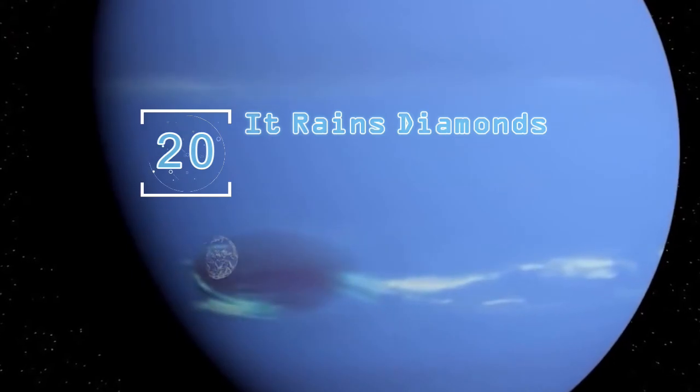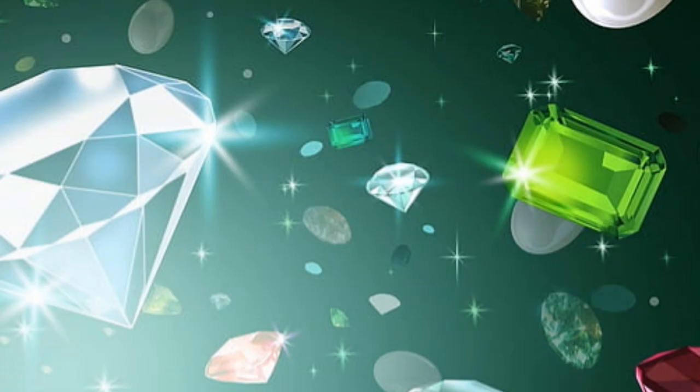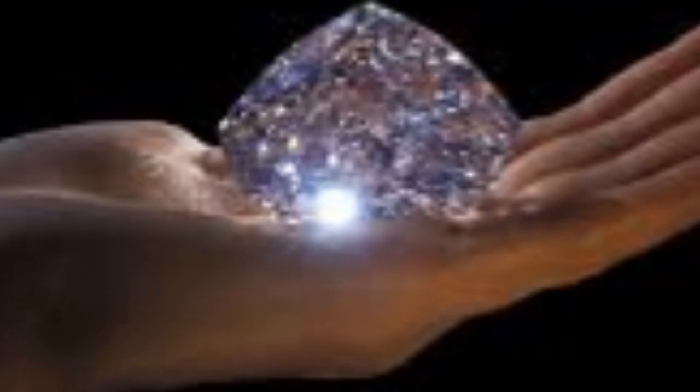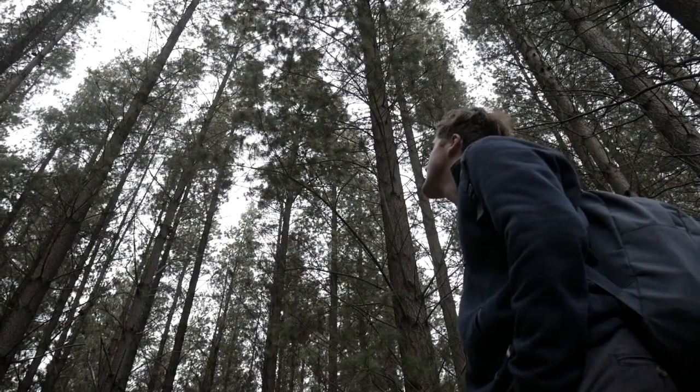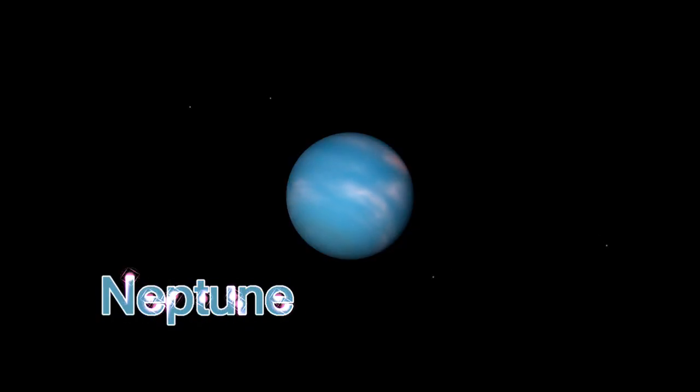It rains diamonds in Saturn, Jupiter, and two other planets. Diamonds are some of the most precious and expensive items on Earth, but if you could somehow make the trip down to Saturn, Jupiter, Uranus, or Neptune in one piece, you can literally own as many diamonds as you want.